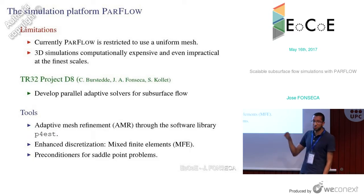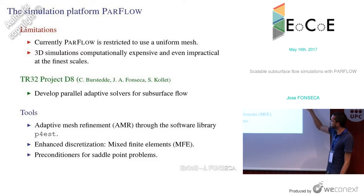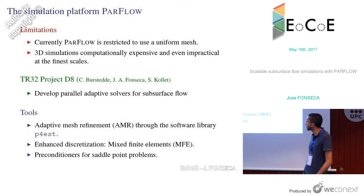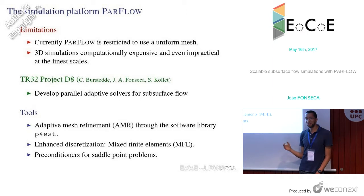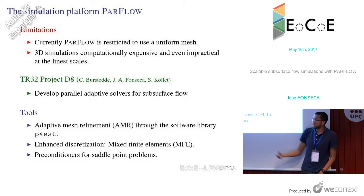Why adaptive? Because if you need high resolution in a particular area, you zoom in only there, and when nothing interesting is happening, you make the mesh coarse. The tools we are using to reach this goal are: adaptive mesh refinement using the software library P4est, which is a collaborative effort between the University of Texas and the University of Bonn; enhanced discretization by switching from finite differences to mixed finite elements, which are better suited for adaptive meshes; and new preconditioners, since changing the discretization changes the underlying properties of the linear systems.